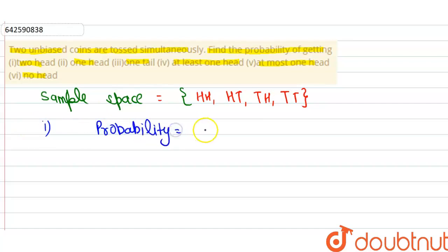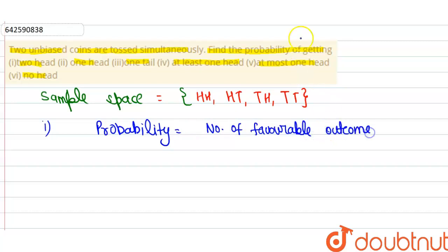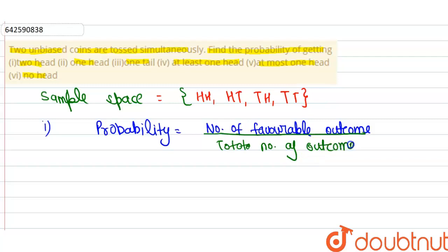Now, probability is equal to the number of favorable outcomes divided by the total number of outcomes. The total number of outcomes here is four.